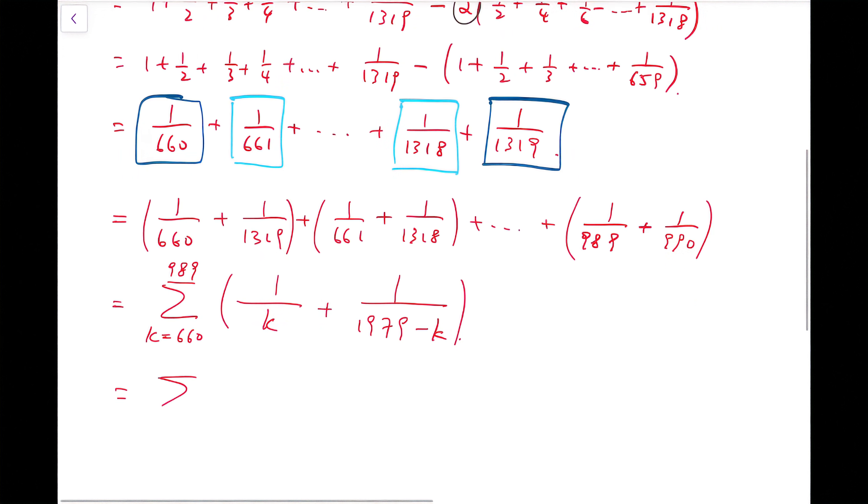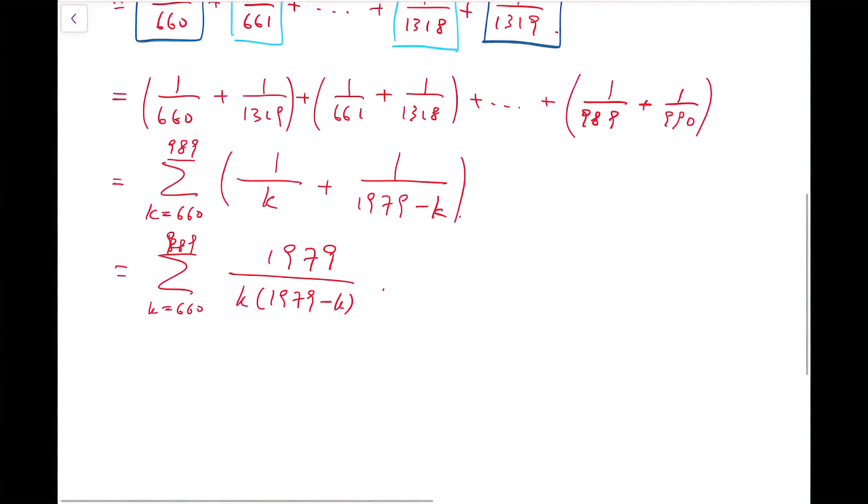Now, if I treat it this way, then it will become k times 1979 minus k, and the numerator is exactly 1979. Now I can take out the 1979, and the summation is just another bunch of fractions, of the form 1 over k times 1979 minus k.